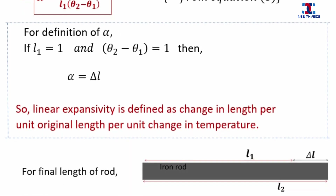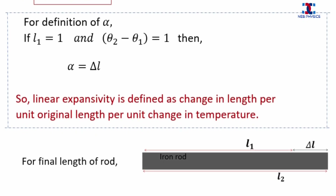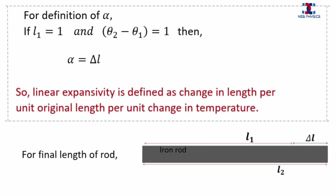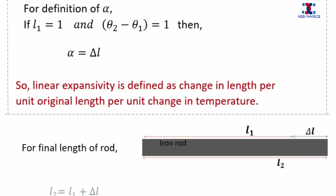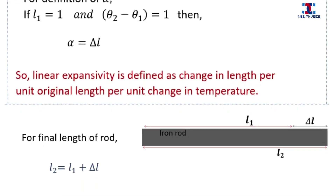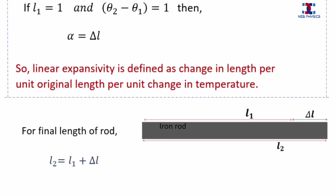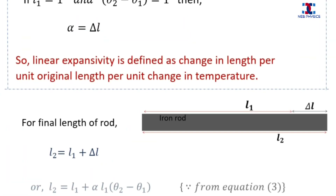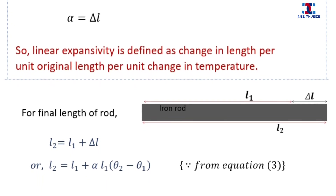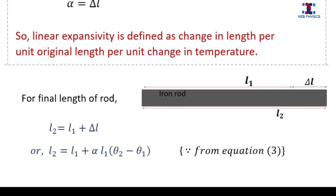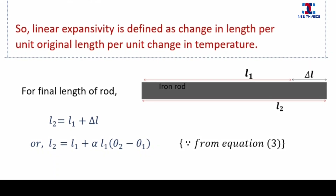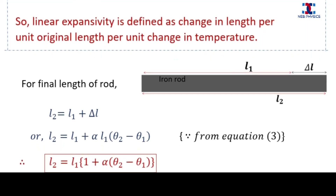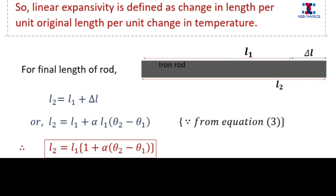Now let's find the final length of the rod. From the diagram, the final length L₂ equals L₁ + ΔL. Substituting the value of ΔL from equation 3 gives L₂ = L₁ + α · L₁ · (θ₂ − θ₁). Taking L₁ as common, we get the final expression for the length of the rod after expansion.